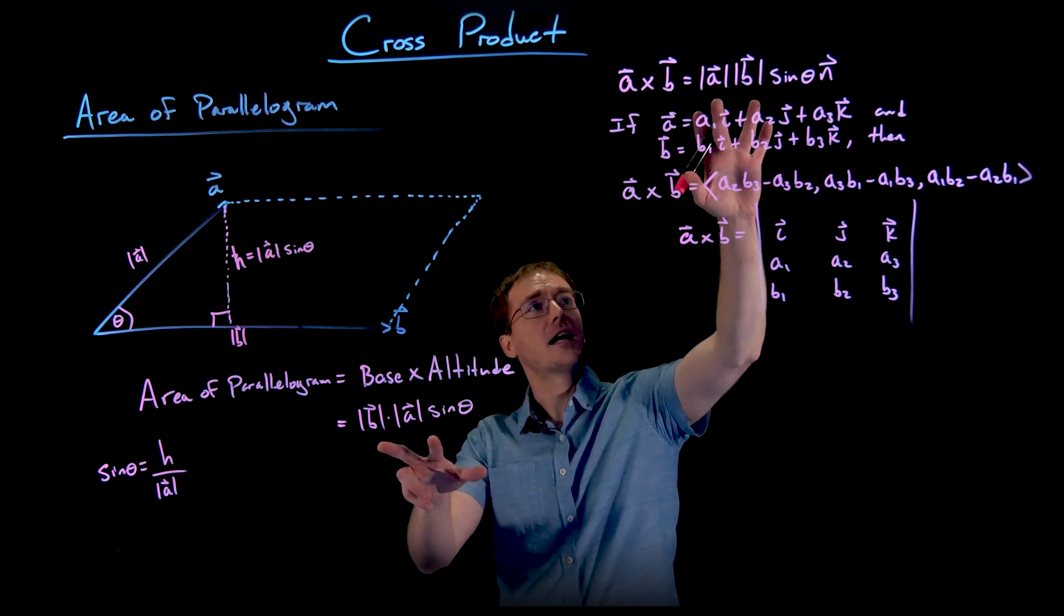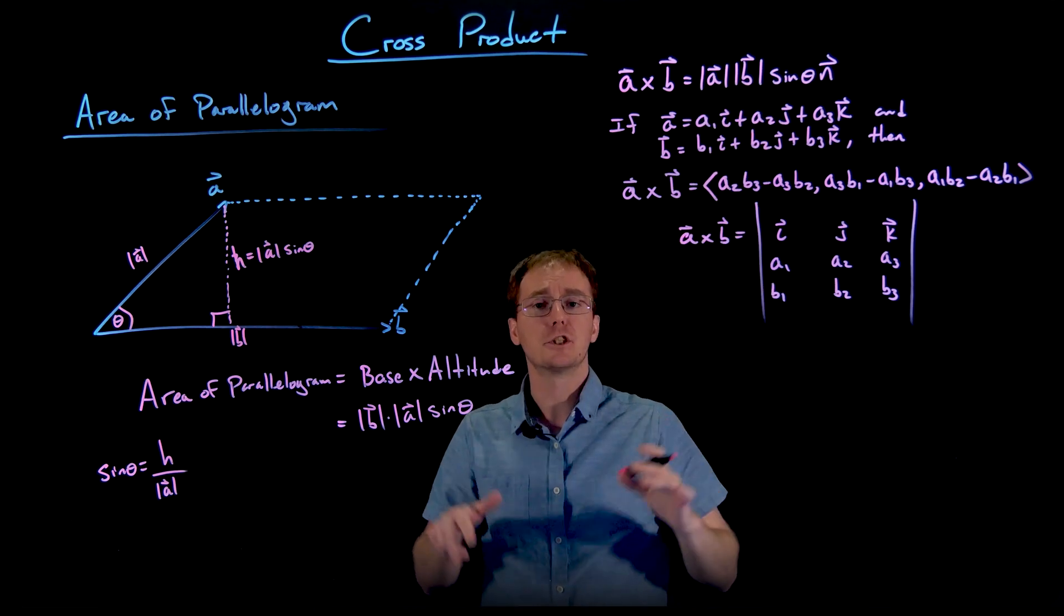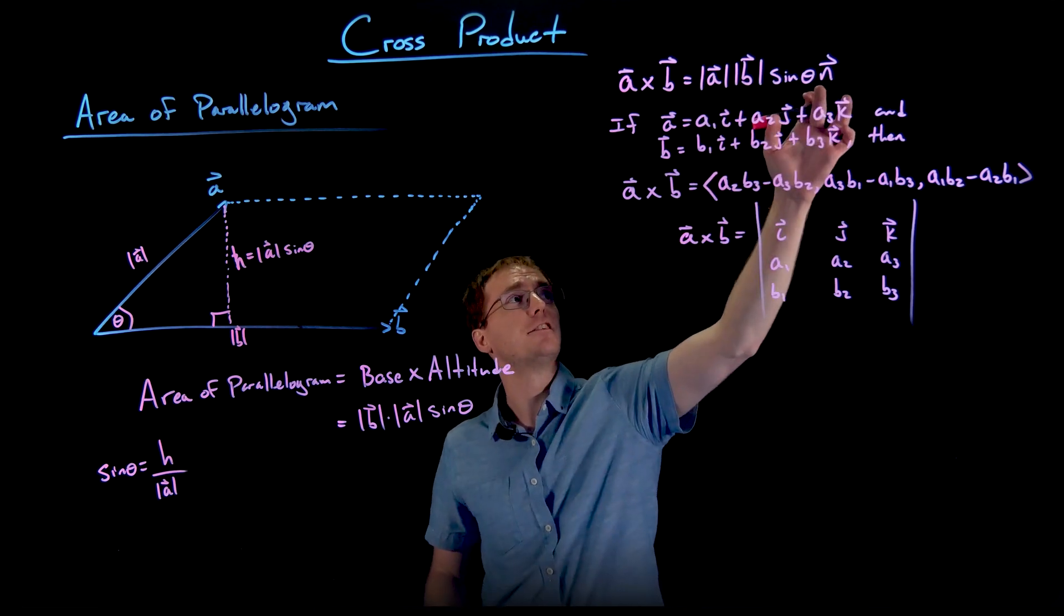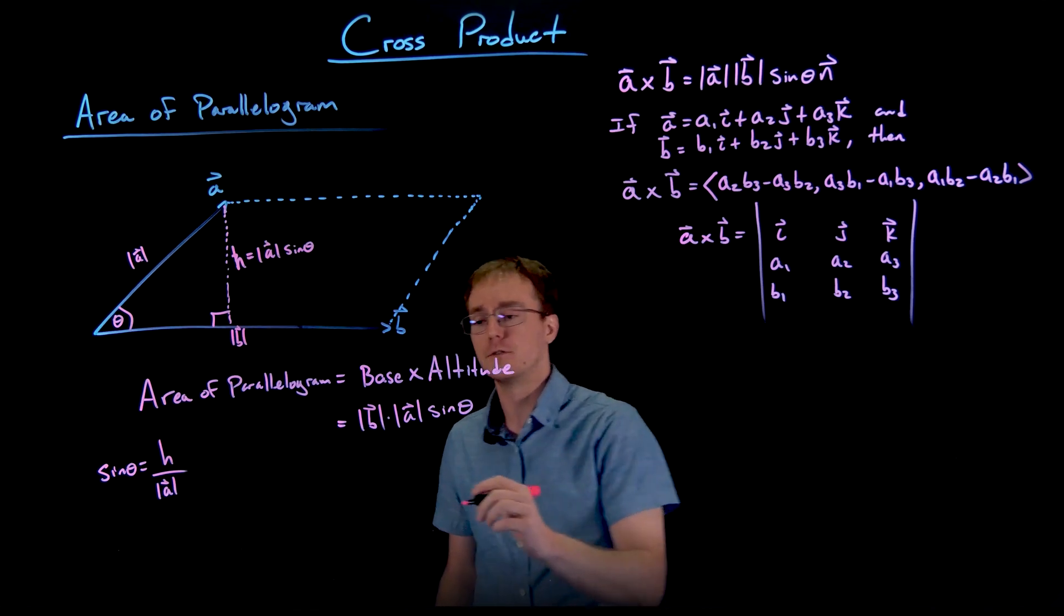And so well that looks a heck of a lot like our cross product formula in its geometric version. The only difference is it's missing that unit vector N attached at the end, and well if we take the absolute value